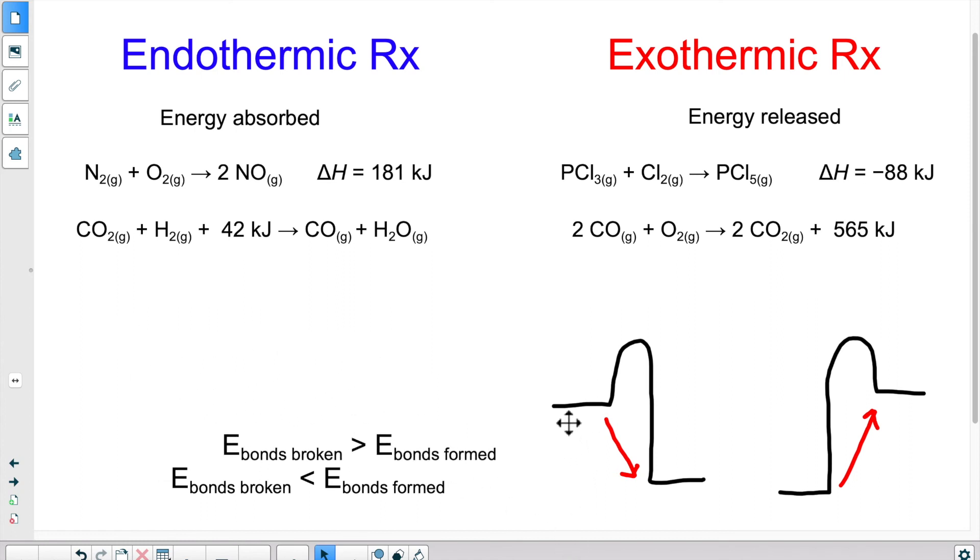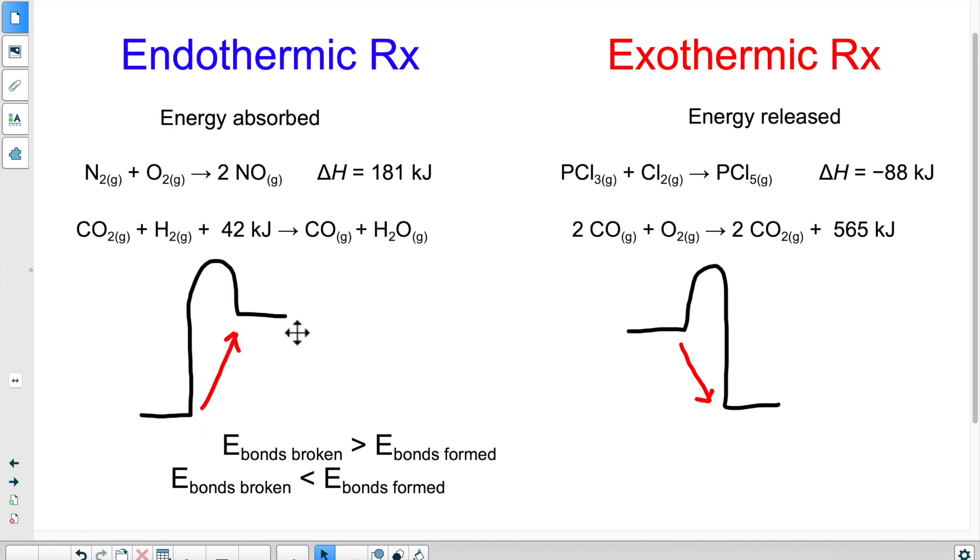Now, if the reactants have a certain energy and the energy goes down and then we have the products, there's a loss of energy overall during the process. Is that endo or exo? If you said exothermic, you are correct. This would be an example of an exothermic graph, automatically making this one endothermic. Our reactants have less energy, they gain energy, they become the products. The products have more energy. There's a net gain of energy, so it was endothermic.